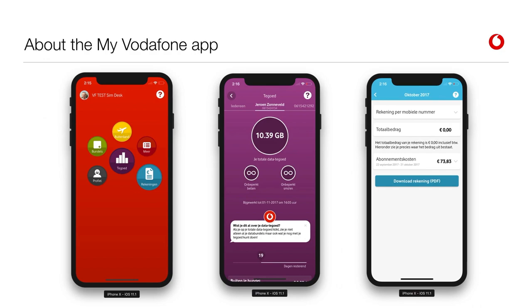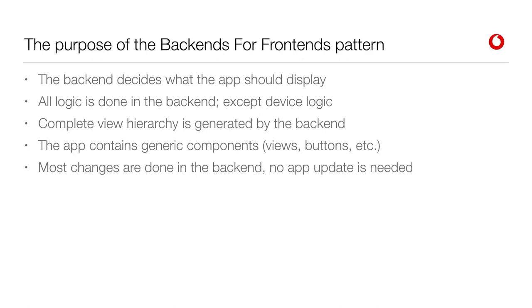So what's the purpose of the BFF pattern? The first thing is that the back-end decides what the front-end should display, so all logic is done in the back-end, except device logic such as the usage of the camera or a live chat API. The complete view hierarchy is generated by the back-end, which talks to back-ends internally and sends it to the front-end. The app will display that with generic views it contains. Because of this, most changes can be done in the back-end, so no app update is needed — all changes are directly seen by the user with the same app.